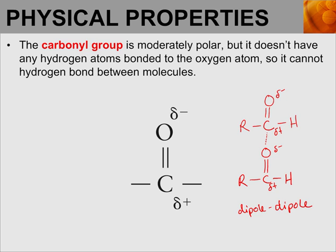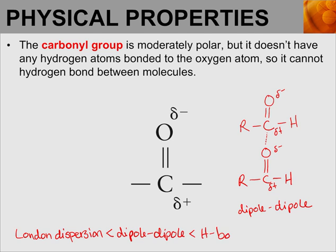Let's briefly review the strengths of the different intermolecular forces. The weakest is Van der Waals, also known as London dispersion forces. That is weaker than dipole-dipole interactions, and dipole-dipole interactions are weaker than hydrogen bonds. So aldehydes and ketones are kind of in the middle.